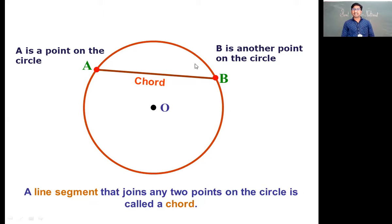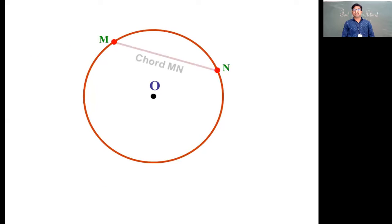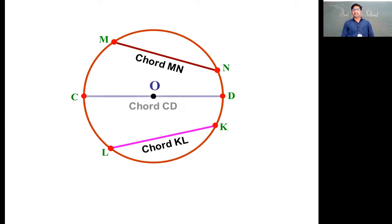Now, let us check the relation between chord and diameter. If you remember, the line segment that joins any two points on circle but passes through center is called diameter. Here, the chord C to D is also a chord. But what should we name it - diameter or chord?